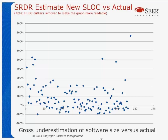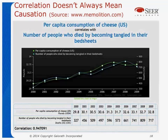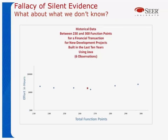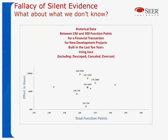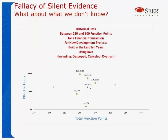Ways to mitigate that are to look at actuals and look at the differences. There's also the issue of correlation. This shows the correlation of per capita consumption of cheese in the United States and the number of people who died becoming tangled in their bedsheets — a 0.94 correlation, which is really good. The only trouble is there's no causation. Cheese and bedsheets don't go together. We need to be careful when looking at models and estimates as well. Here's an example: the red point is historical projects between 230 and 300 function points for a financial system built within 10 years. If we look at just the successful projects, it doesn't look so bad — but if we include projects that were de-scoped, canceled, or overrun, we have more suspicion. We need to be careful of people cherry-picking the data.